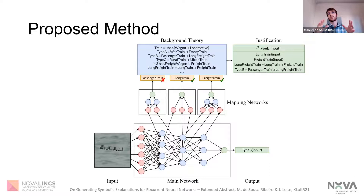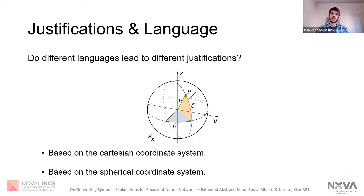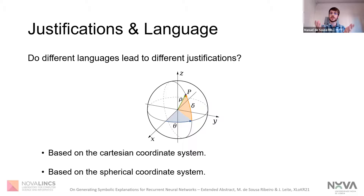When looking at this proposed method, one might wonder whether different languages or background theories will lead to different justifications. The short answer is yes, but we don't find that to be problematic. Similar to human behavior, we can imagine a setting where two different individuals learn different coordinate systems and both want to discuss the same geometrical phenomenon. Given that they've learned different coordinate systems, both of their justifications would certainly differ in form, but they are still both meaningful justifications for the same underlying phenomenon.